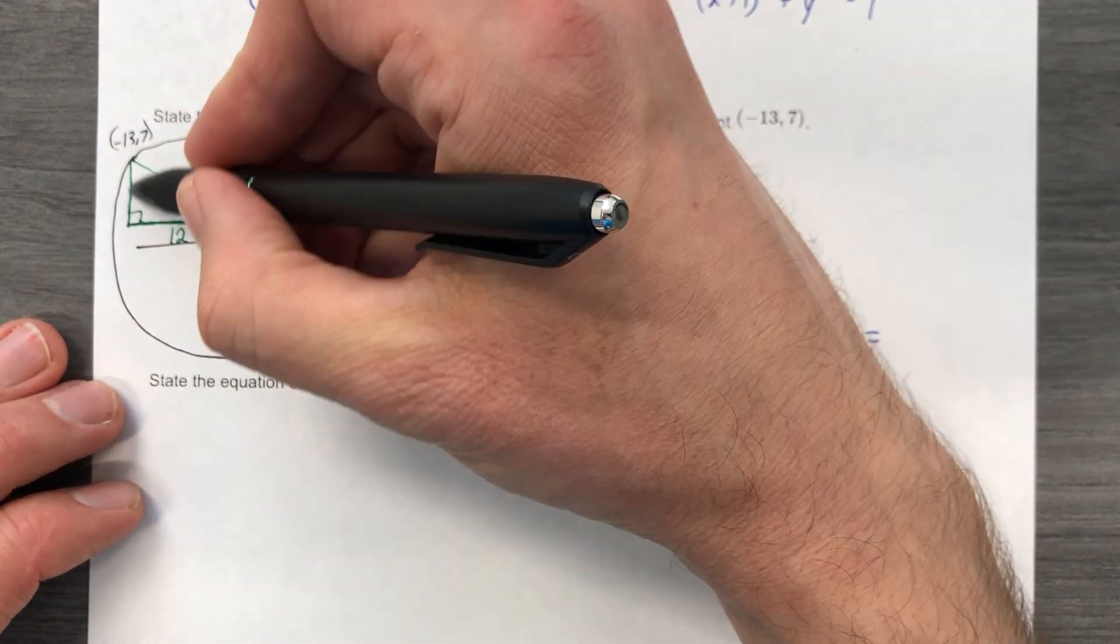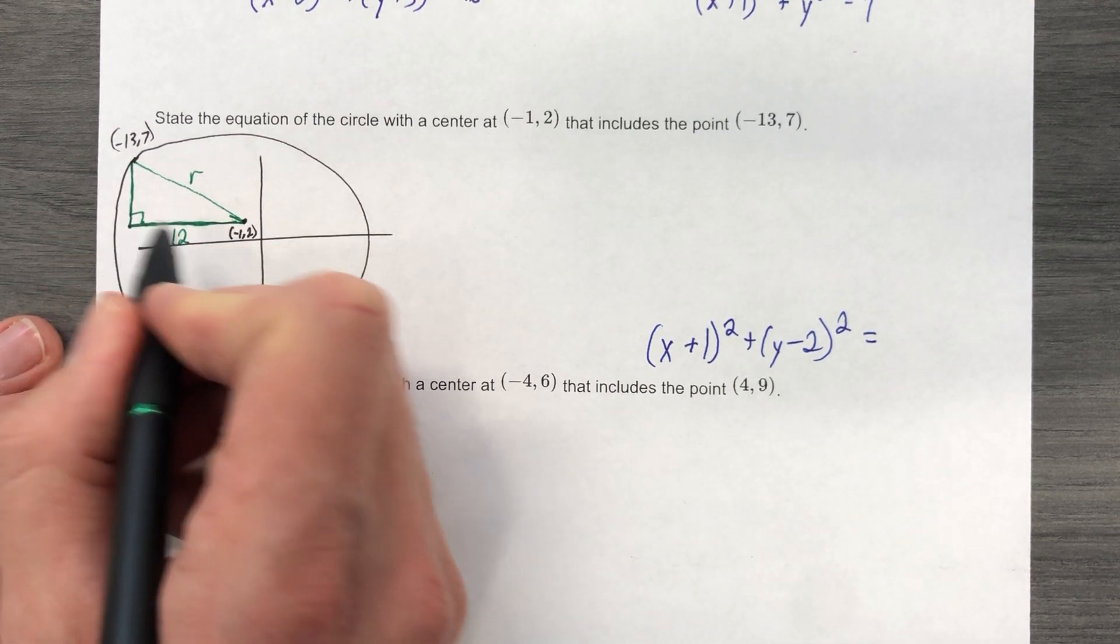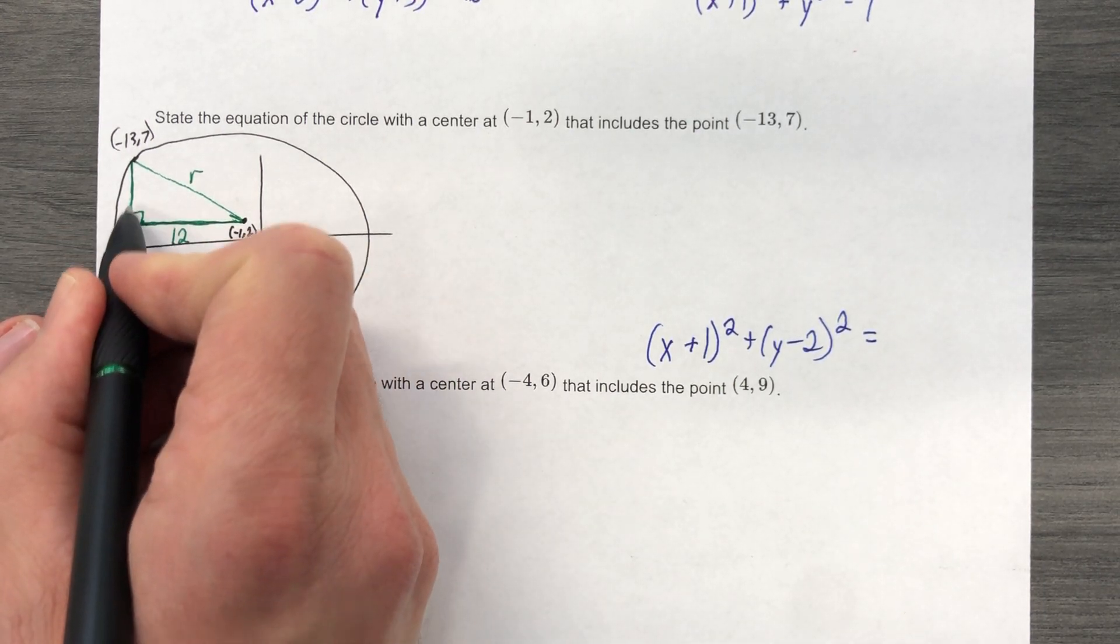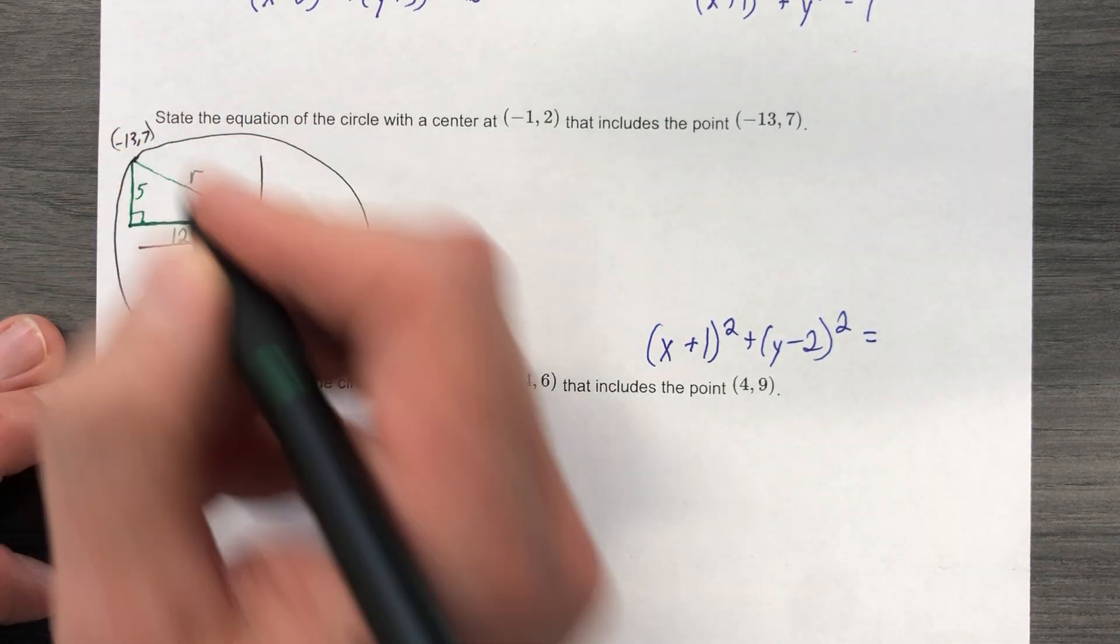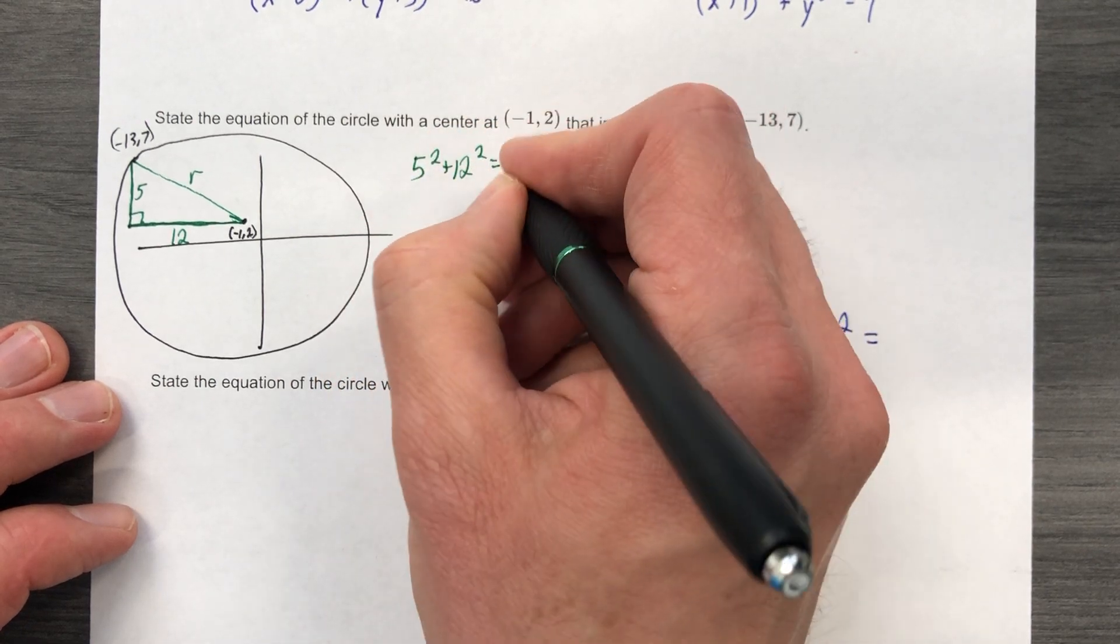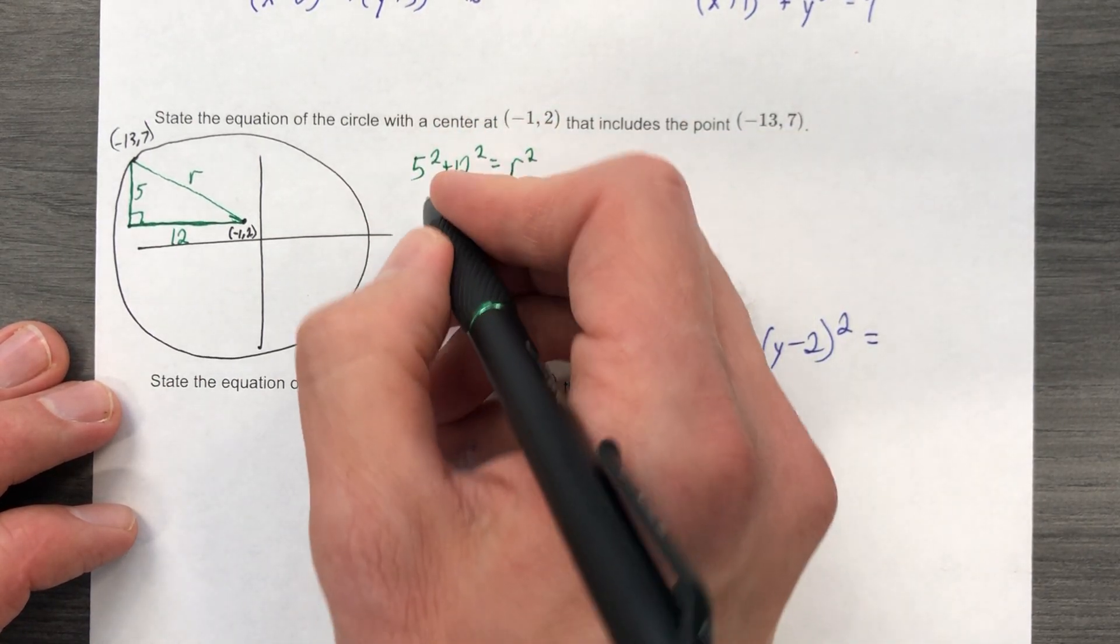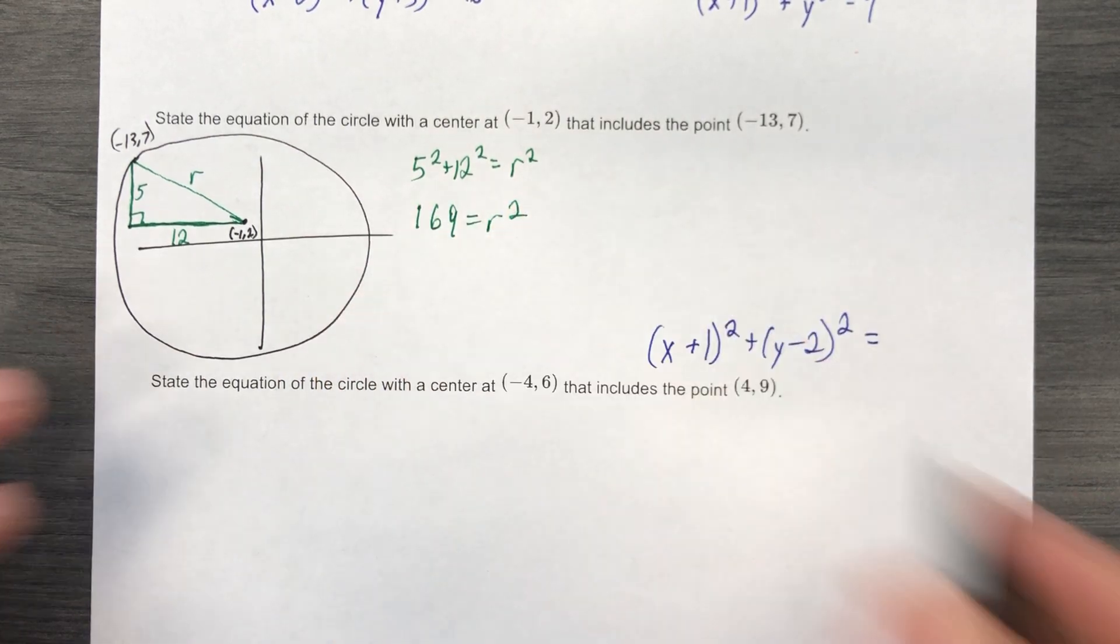I need to know this distance. That is the distance from here to here. Y value here is two. The Y value here is seven. The distance from two to seven is five. Five squared plus 12 squared in no particular order equals r squared. That's 25 plus 144. That's 169, which equals r squared.